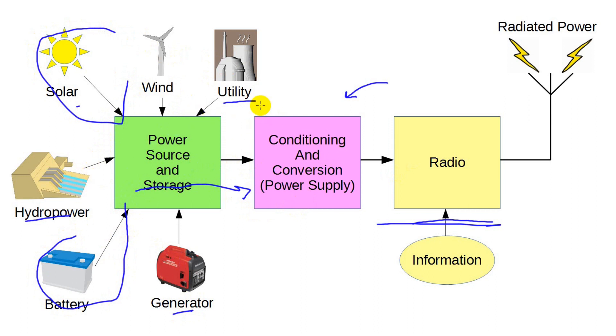Power comes in all sorts of ways, and each has its own peculiar characteristics. So there's often an intermediary function that converts or conditions the power to provide what our radios need.